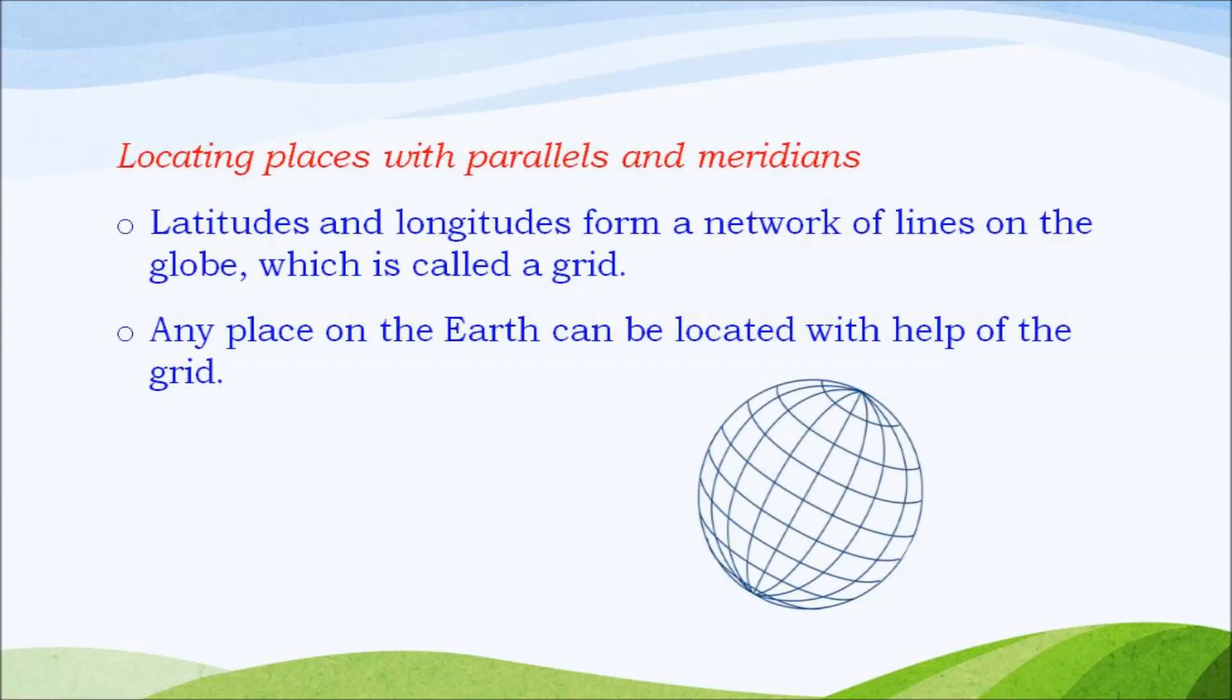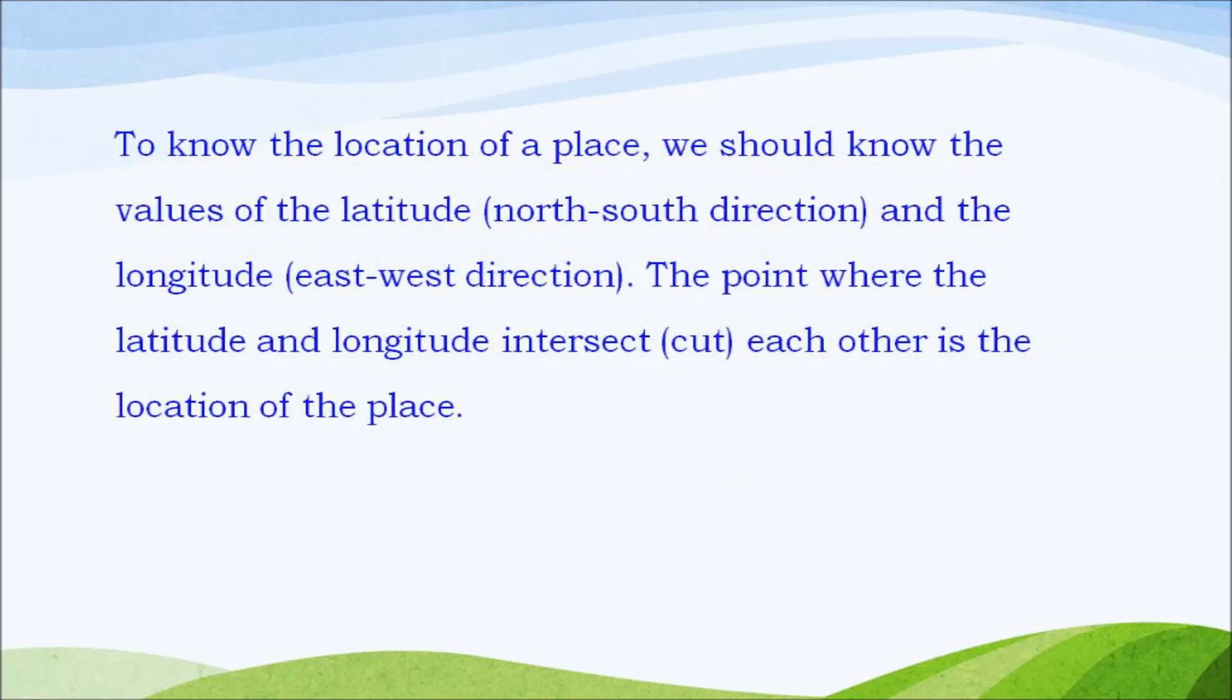Locating places with parallels and meridians. Latitudes and longitudes form a network of lines on the globe which is called a grid. Any place on the earth can be located with the help of the grid. To know the location of a place we should know the values of the latitude, north or south direction, and the longitude, east or west direction. The point where the latitude and longitude intersect, cut each other, is the location of the place.